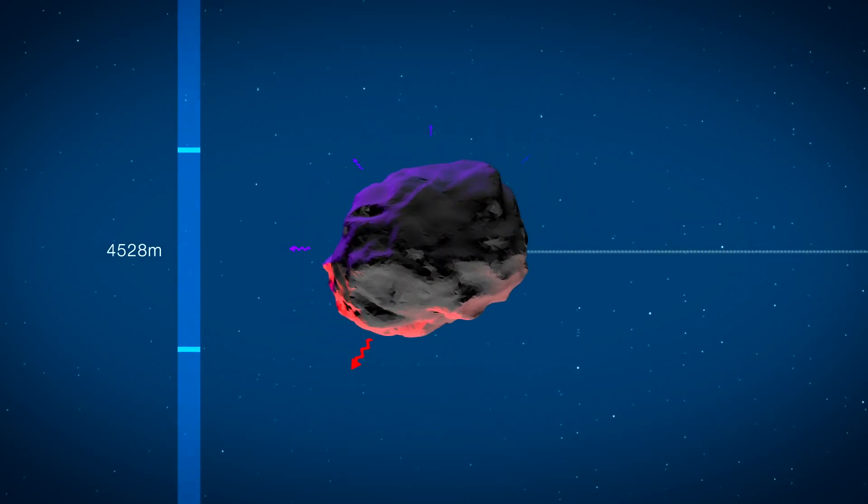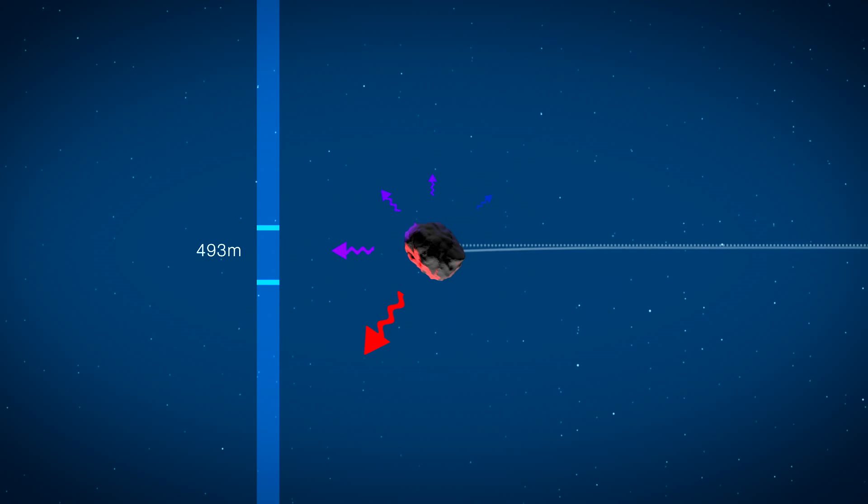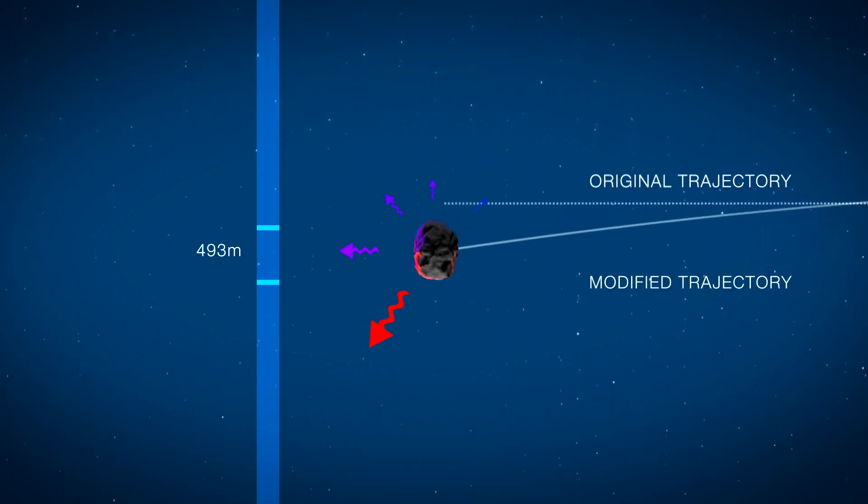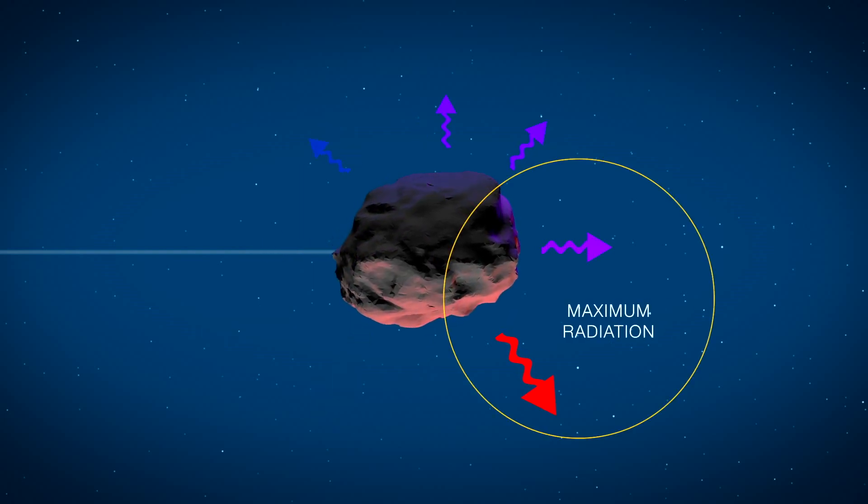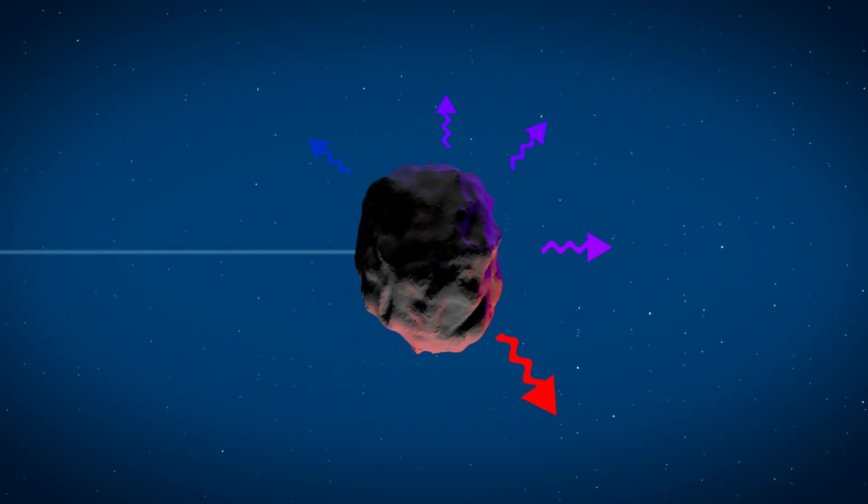On larger asteroids, this doesn't amount to much, but on small ones, it can make a pretty large change over time. Because the surface emits the most heat radiation at the end of the day, the direction the asteroid rotates can ultimately determine what happens in the long run.